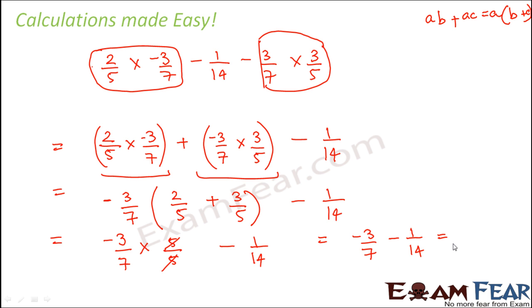Now pretty easy to calculate the LCM of 7 and 14 which is 14. So this would be minus 6 minus 1. That is minus 7 by 14, which is minus 1 by 2.